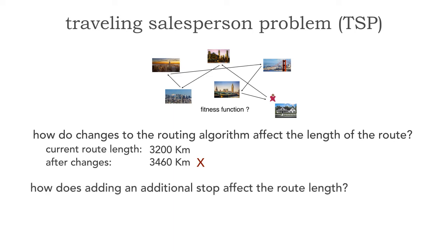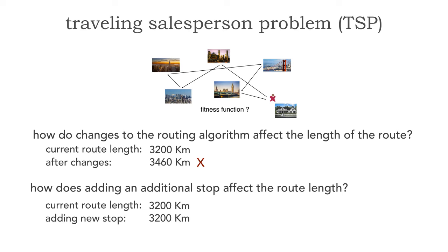Another way of using this: what happens if we add an additional stop? If we have a fitness function — which is an automated test — we know our current route length is 3200 kilometers. We'd like to add an extra stop in Brussels. If we do that, it's still 3200 kilometers. The key point is we now know it's okay to add that stop. This is an example of a fitness function.